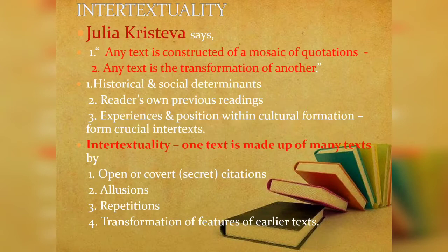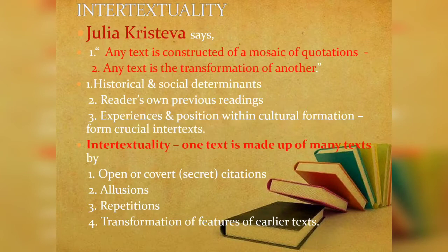Julia Kristeva says intertextuality means one text is made up of many texts, and it is done through open or secret citations, allusions, repetitions, and transformation of features of earlier texts. Citations refer to quotations — texts taken from other sources in a secret manner. Allusions refer to references of texts taken from other books. Repetitions are sources taken from other texts and repeated into another literary work. Transformation of features of earlier texts means taking the special features of earlier texts, transforming them and incorporating them into a literary text.